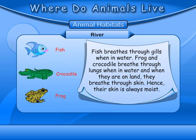Fish breathe through gills when in water. Frogs and crocodiles breathe through lungs when in water and when on land they breathe through their skin. Hence their skin is always moist.